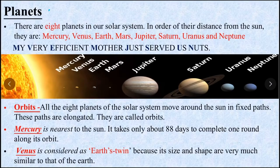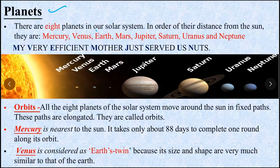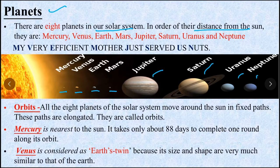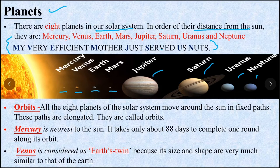Now what are the planets? There are eight planets in our solar system in order of their distance from the sun. They are - Mercury, Venus, Earth, Mars, Jupiter, Saturn, Uranus and Neptune. MY VERY EFFICIENT MOTHER JUST SERVED US NUTS. M for Mercury, V for Venus, like this.